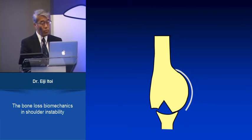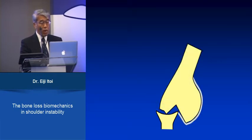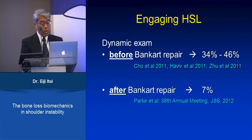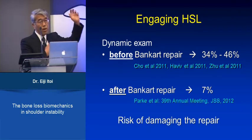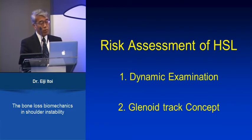There is only one report in which dynamic examination was performed after the Bankart repair. Out of 1,000 arthroscopic Bankart repairs, Park and colleagues found that only 7% showed engagement after the repair. However, the problem with this procedure is the risk of damaging the repair — bringing the arm to end range may break your repair. So to avoid this risk, we recommend the second method: use the glenoid track concept.